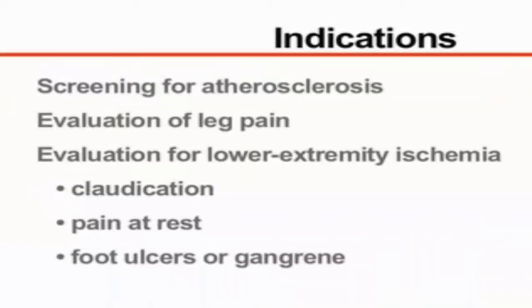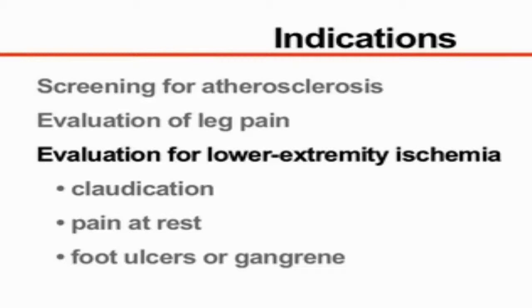Indications for measuring the ankle brachial index include screening for atherosclerosis, evaluation of leg pain, and evaluation of lower extremity ischemia. Consider lower extremity ischemia when there is a history of claudication, which may occur at the buttock, thigh, or calf levels, pain at rest, particularly in the foot, or foot ulcers or gangrene.